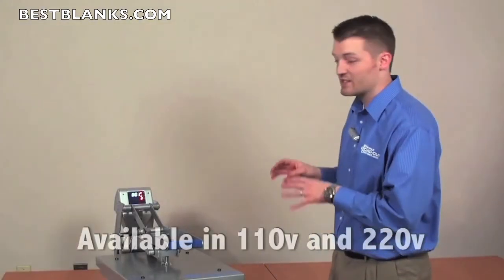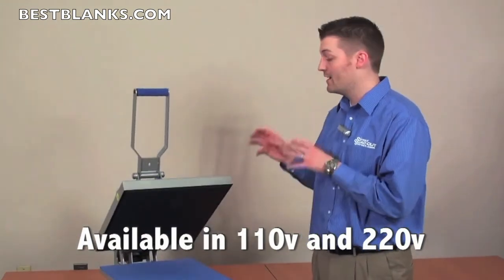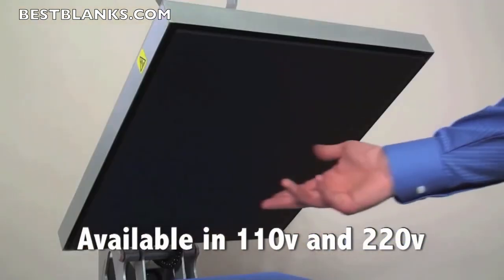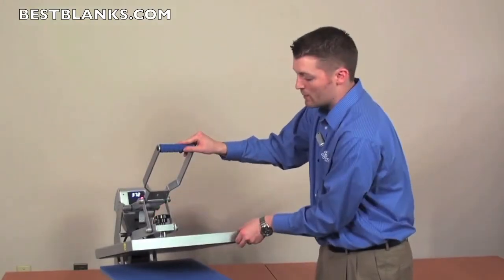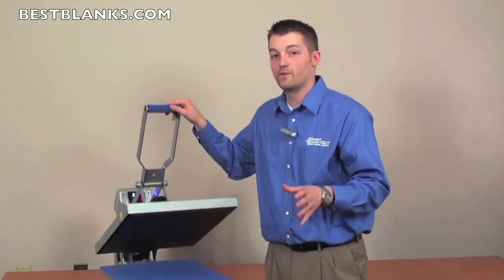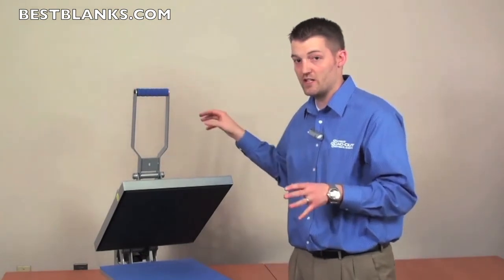This comes in 16 by 20 inches or 40 by 50 centimeter sizing. It also has the Teflon coated heating element, the over center pressure adjustment, and the upper flotational platen that you come to expect on all Hotronix machines.